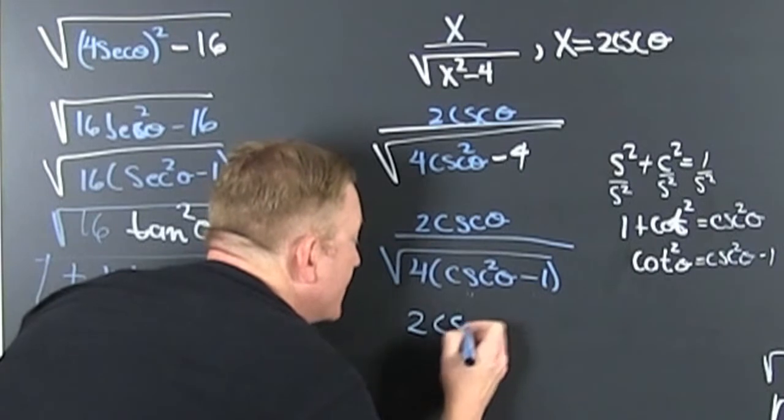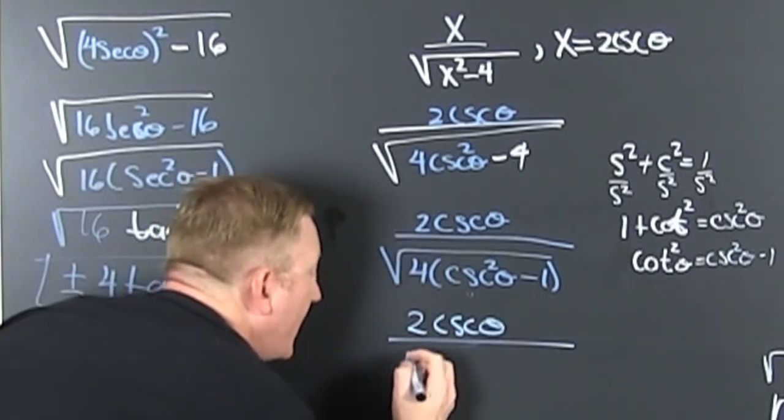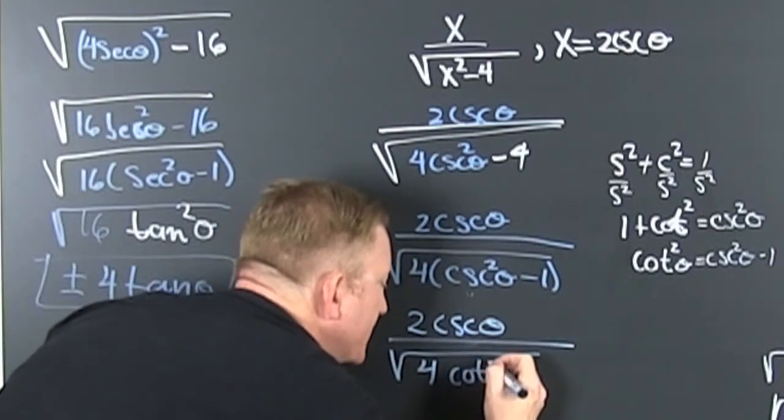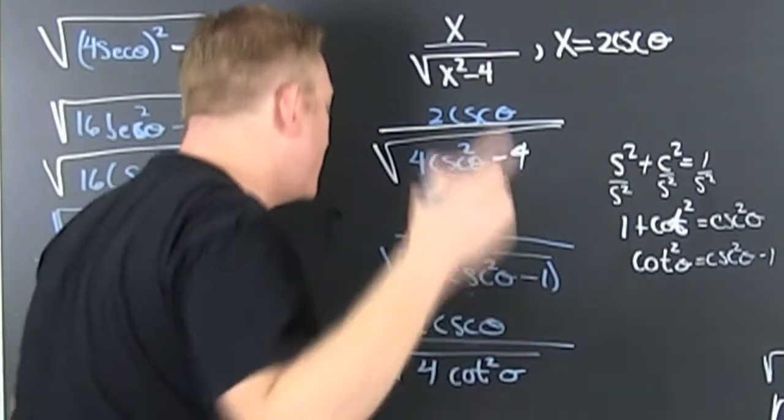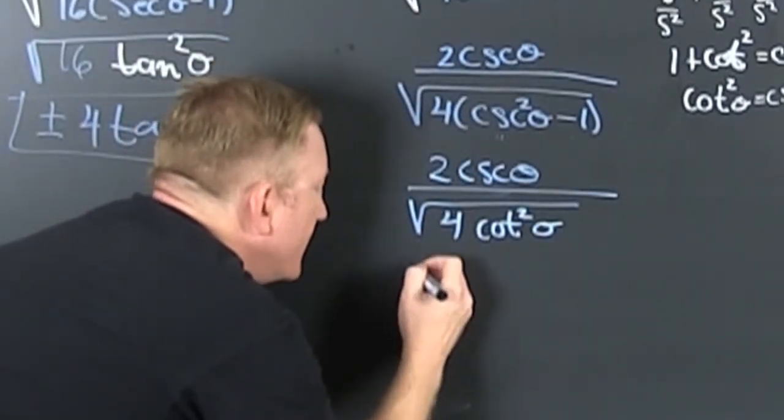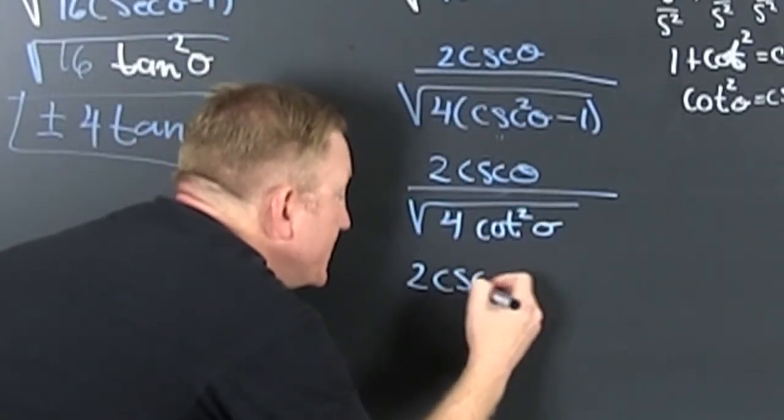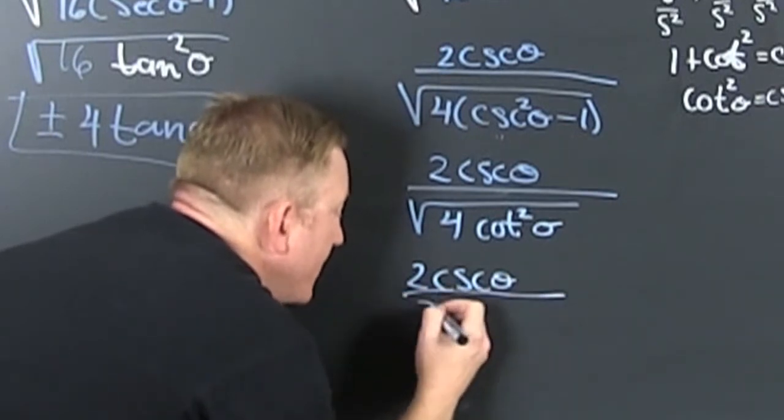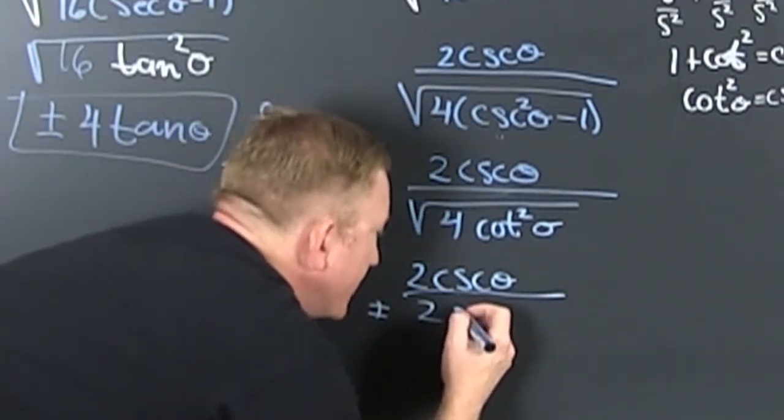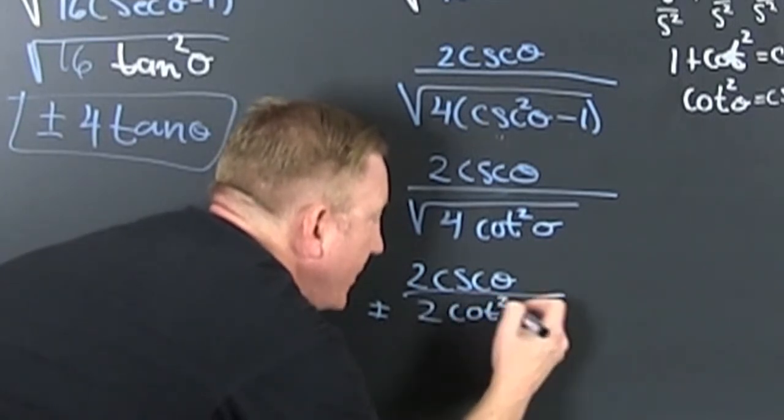That's two times cosecant theta divided by the square root of four times - what is it? It's the cotangent squared theta. So then what? Finish him. So then I go. And that's two times the cosecant theta divided by two. Remember there should be a plus and minus on the other. But your book probably only chooses the plus.